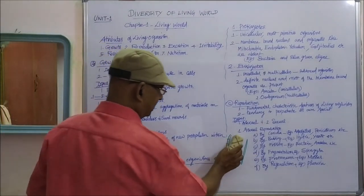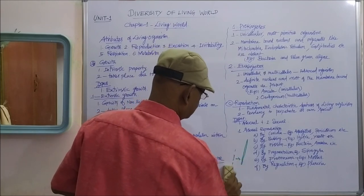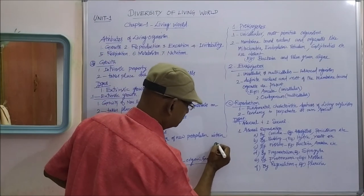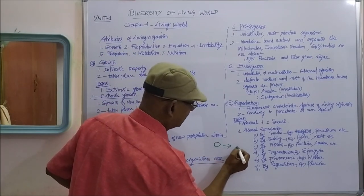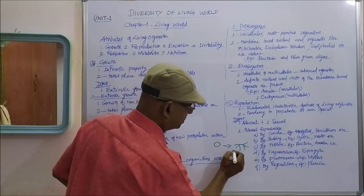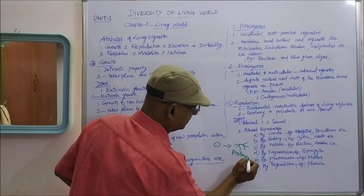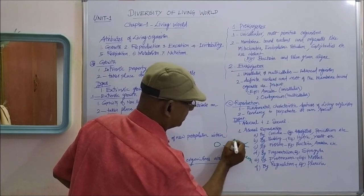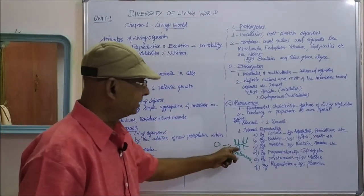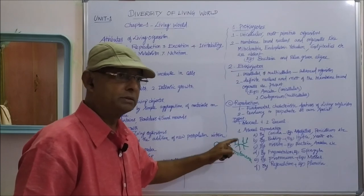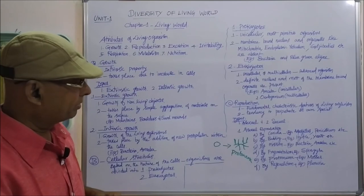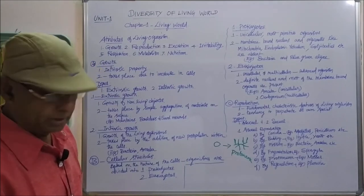The next method is protonema. In the case of mosses, a bryophytic plant, the spores germinate into a branched green filamentous structure called the protonema. The protonema produces several new plants. By protonema, asexual reproduction takes place.